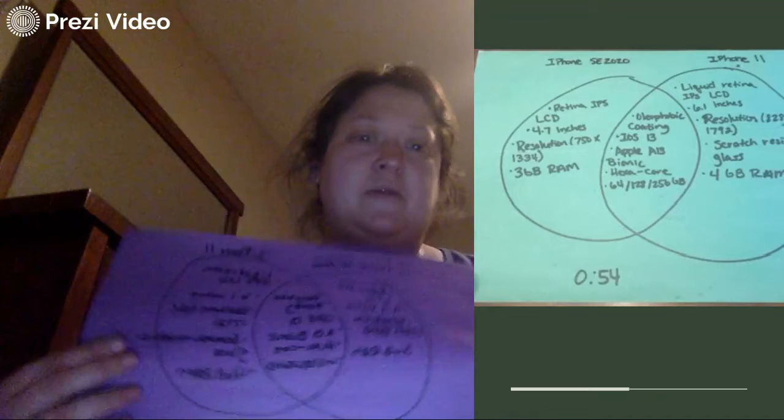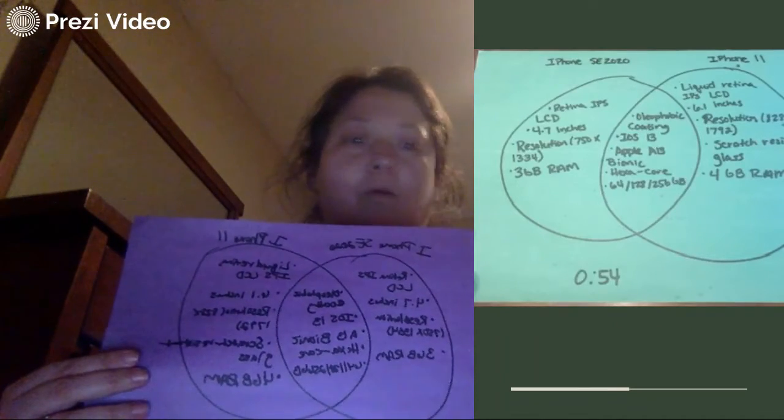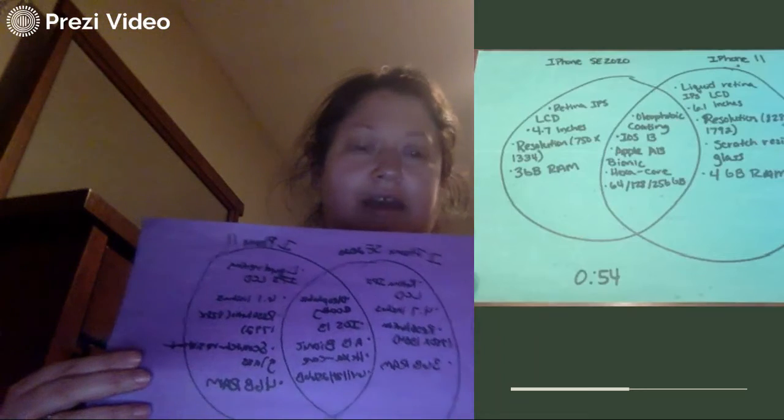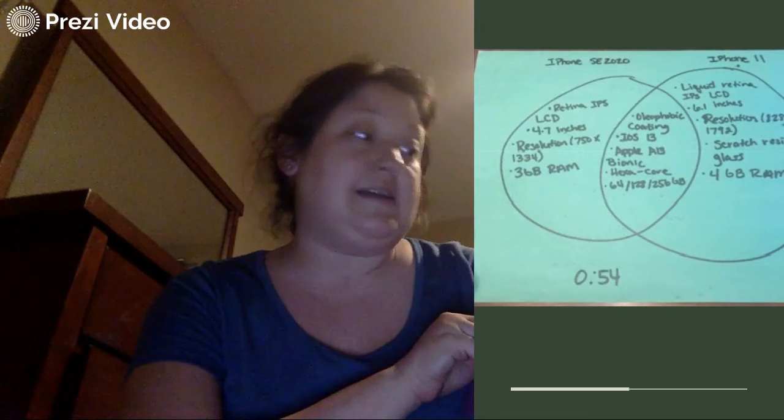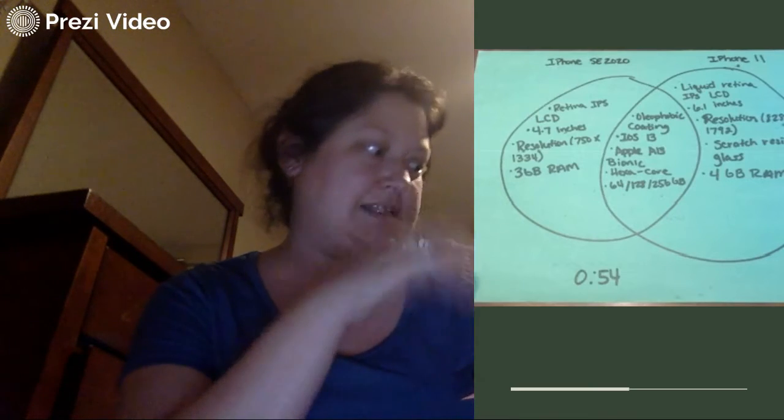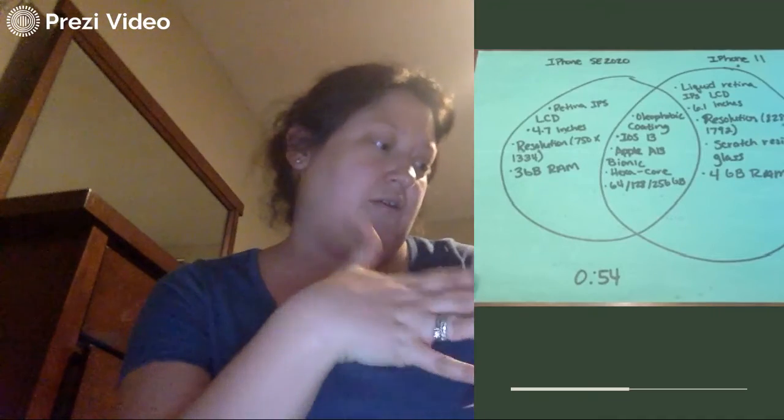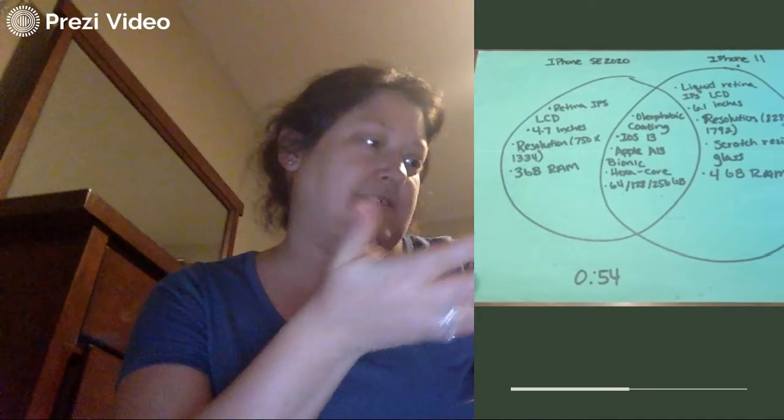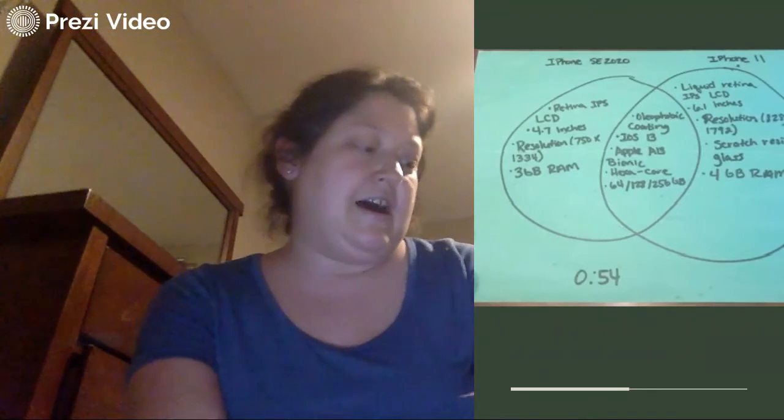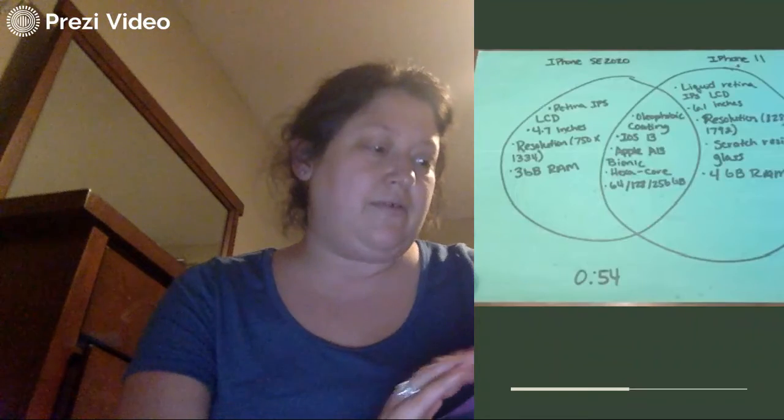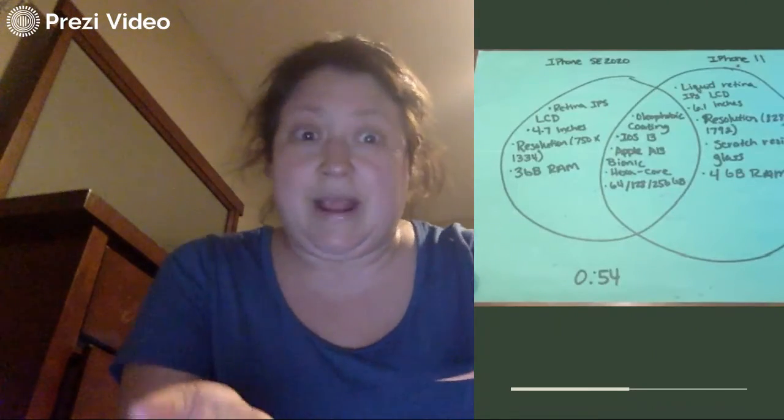However, if Miss Burrell was really going to choose between one of these two phones, she does not have any idea what this stuff means. I do not have any idea what a retina IPS LCD is. I do know what 4.7 inches and 6.1 inches mean—I think that one's bigger—but I don't really know. I know that you want to have a higher resolution, but there's not a huge difference here, and so I might have to research.